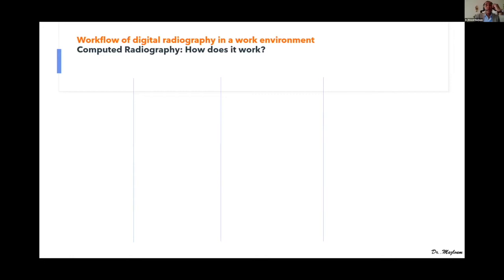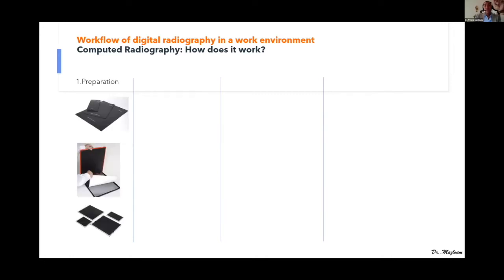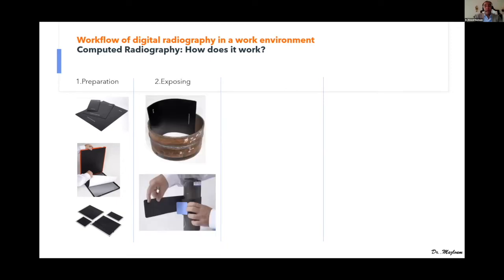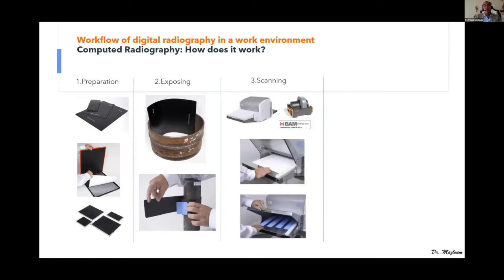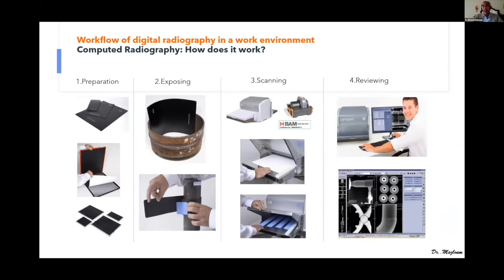Here is how computerized radiography works: first, we prepare our phosphor image plate — either flexible or rigid. Then we expose using X-ray or gamma ray equipment with small or large pipe diameters or flat surfaces. Then we scan the plate into specific scanners. We can use conventional phosphor image plates in standard film sizes — 10×24, 10×40, 30×40 centimeters — or roll film. All are approved per BAM certificates. Once scanned, you can easily review your image using different software.